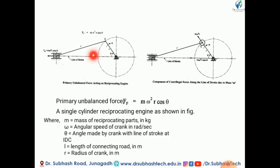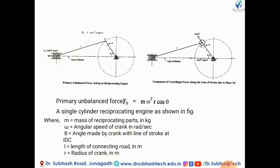Along the line of stroke there are two forces acting: the primary unbalanced force and the secondary unbalanced force. In the case of low and moderate speed engines, the secondary unbalanced force is very small and we neglect it. So we have to balance only the primary unbalanced force FP, which acts along the line of stroke. The primary unbalanced force is equal to m·ω²·R·cos θ. Let us understand the concept of primary unbalanced forces.